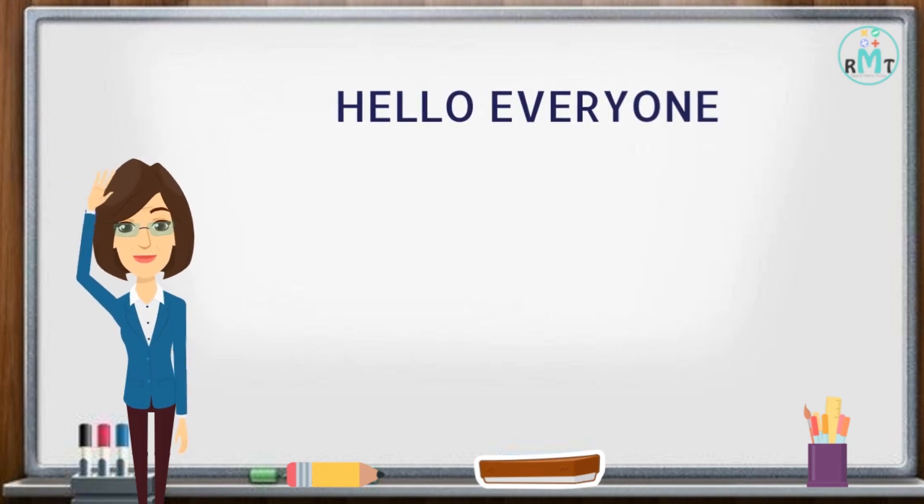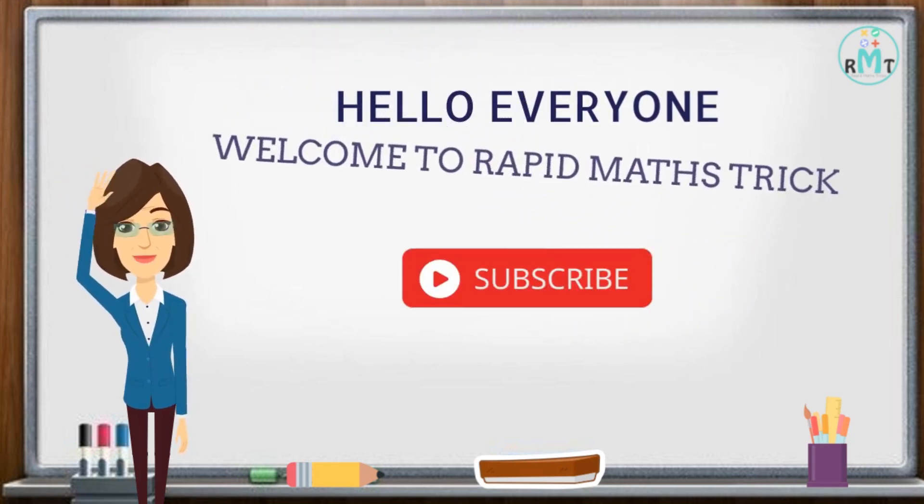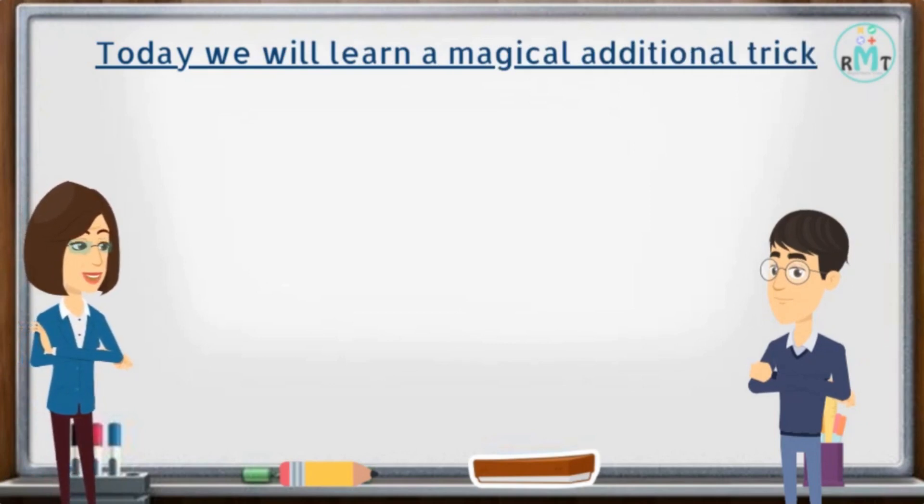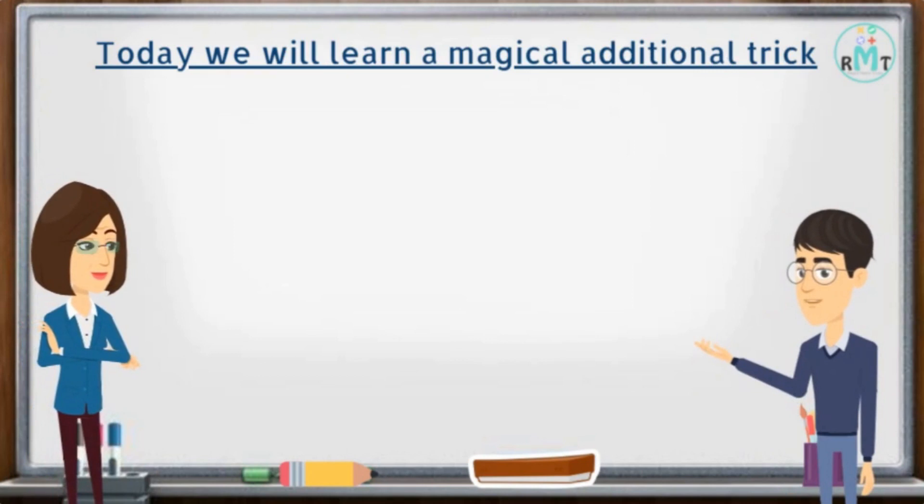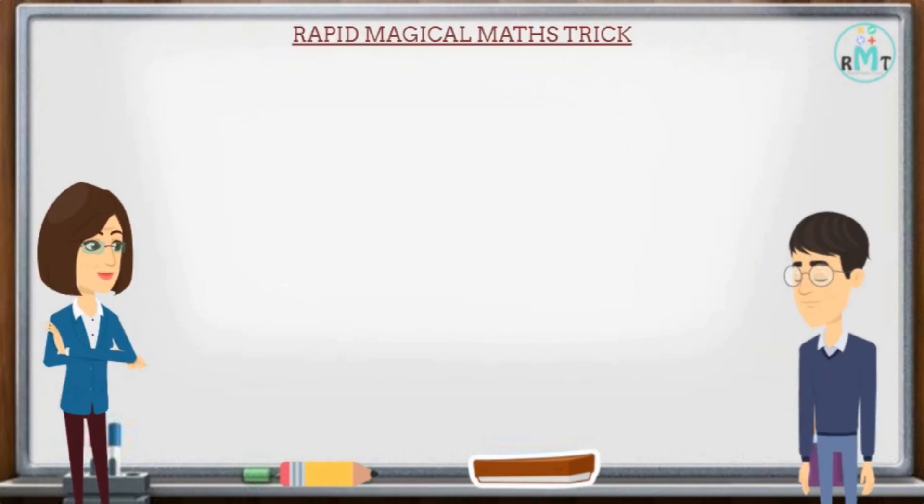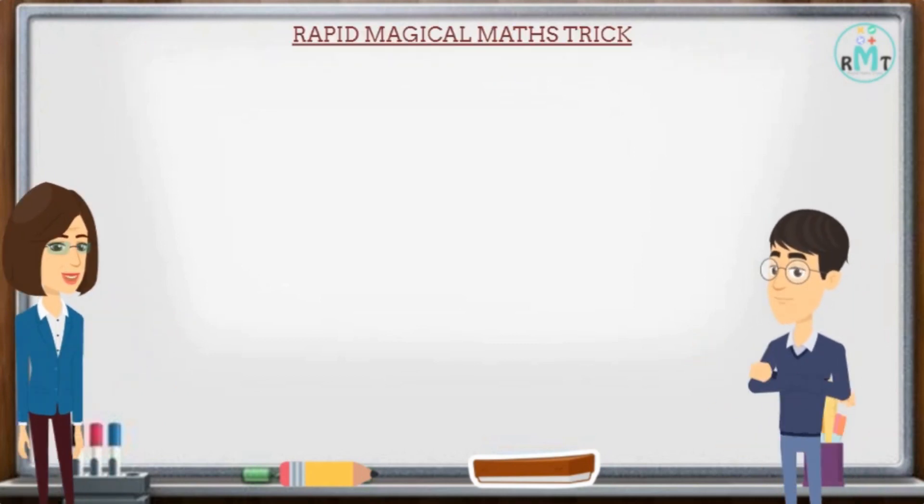Hello everyone, welcome to Rapid Math Trick. We will learn a magical addition trick. What kind of magical trick is it? It's a seven-step trick where I will write the answer after the first step and will compare it with the final answer. It sounds like an impossible trick. No, there is nothing impossible in it. Step one.